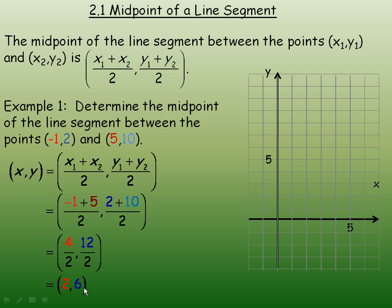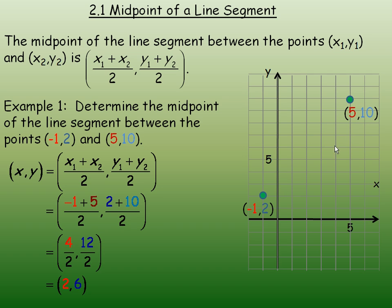So 2, 6 is the midpoint. On the graph, if we plot the two points — here's negative 1, 2 and here's 5, 10 — we join them with a line segment. And 2, 6 is supposed to be the midpoint, so we plot the point 2, 6. Notice that is the middle of the line segment. The distance from 2, 6 down to the lower point is the same as from 2, 6 up to the 5, 10 point. Each half-distance is exactly half the total length — the exact middle of the line segment.